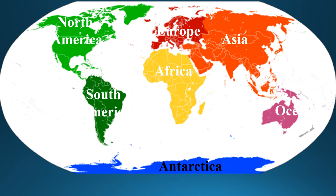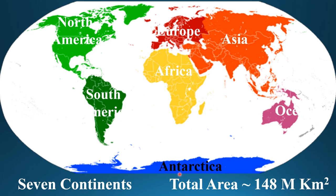Hello everyone, welcome to the Genius Educator YouTube channel. In this video we will see the two smallest countries and the two largest countries in each continent. The world has seven continents: Asia, Africa, North America, South America, Europe, Oceania, and Antarctica. The total area of these continents together is 148 million square kilometers. So in this video we will see the two smallest and the two largest countries in each continent.